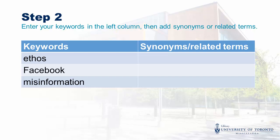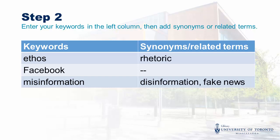When you're brainstorming synonyms and related terms, try to think of other words to describe your idea. We'll add rhetoric to the first line, and disinformation and fake news to the last line. Facebook is a unique term, so we don't need to add anything to that line. It's always worth spending a minute to come up with synonyms and related terms to make sure you don't miss something important.